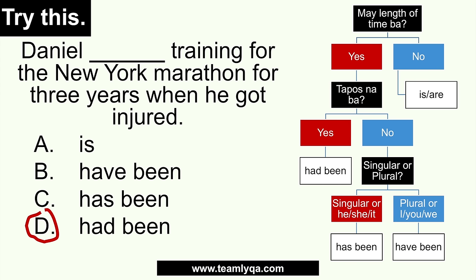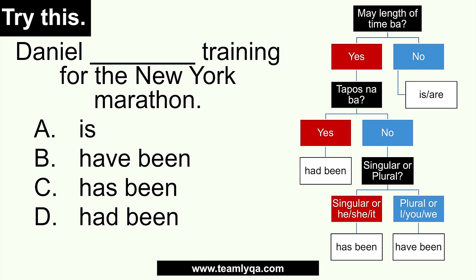Now how does 'is' show up? New sentence: Daniel blank training for the New York Marathon. First question: is there a length of time? No — there's no 'for three years,' no 'for a week,' no 'since February.' No length-of-time indicator at all. So the answer falls to is or are, or in the case of I, am. Since Daniel is singular, the answer would be is. Daniel is training for the New York Marathon.